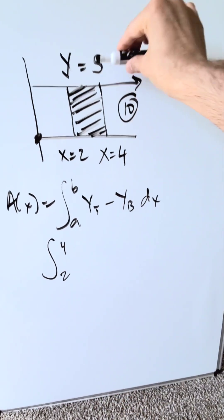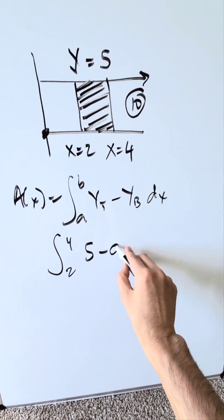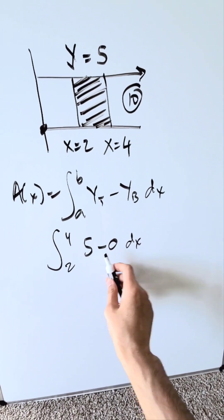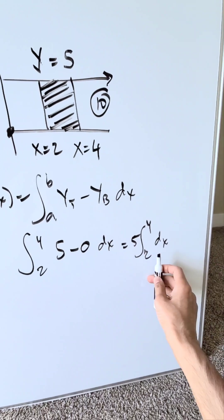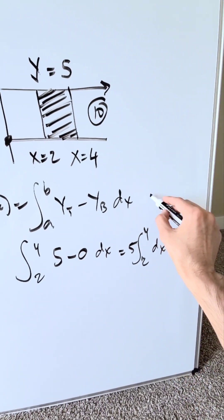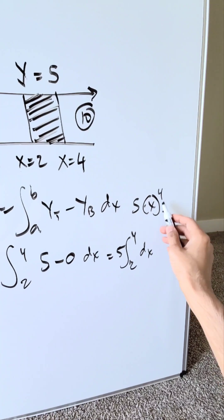What's my top function? It's y equals 5. What's my lower function? My x-axis, y equals 0, dx. You're getting here a 5 which you can push outside. You have 2 and a 4 dx. The antiderivative of which will come from here will be what? It'll be an x. You'll have a 5 times x, upper limit 4 and a lower limit 2.